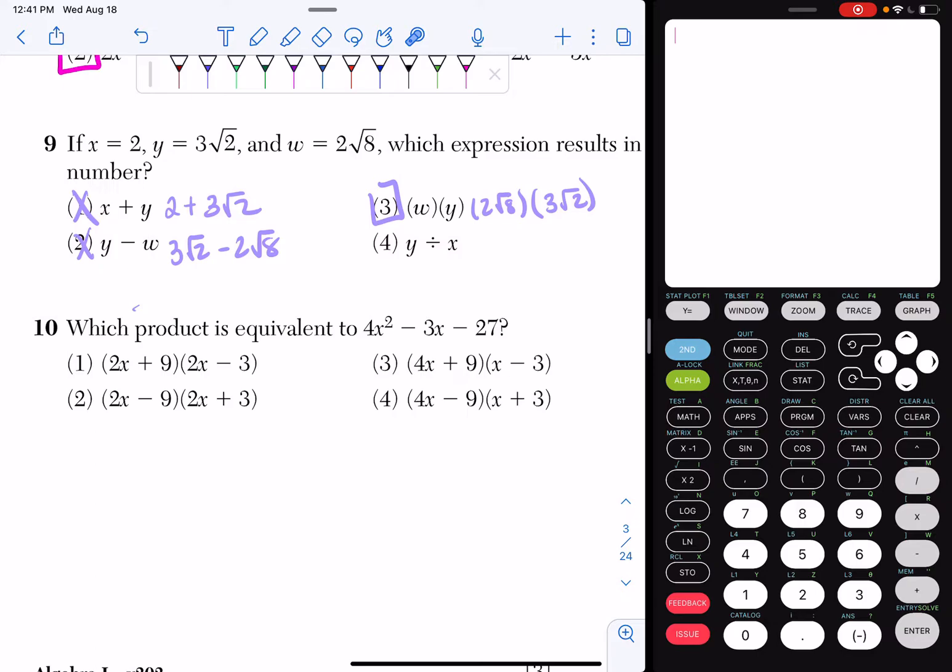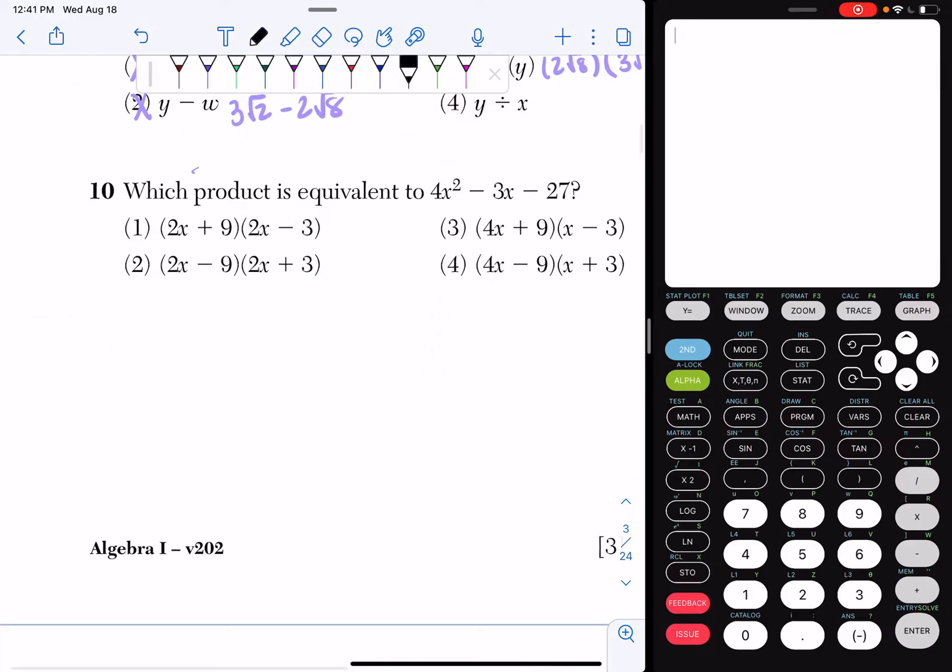So there's two ways I can do this. I mean, well, there's multiple. If I look, all of my answers are in factored form, so I could factor this, or I could box method each of these. So I'm going to actually box method each of these. So I'm going to box method this one first.